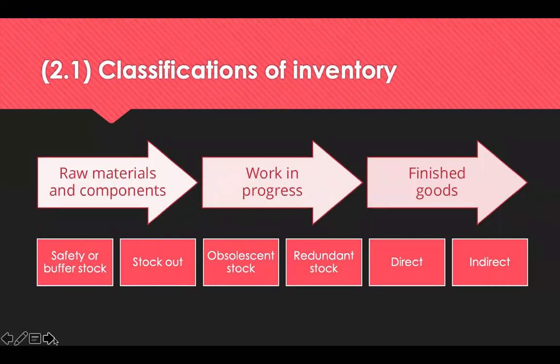A stock out is when you run out of stock. Obsolete stock is often finished goods where demand is irreversible or falling towards zero, like food ingredients which are out of date. Redundant stock is oversupply in its current location — there is potential demand for it, but just not where it currently is, so it can be redirected to other users. Direct supplies are supplies directly incorporated into a finished product, while indirects are not incorporated into a product or sold to a customer; they are required to keep the business functioning, like machine spares, IT equipment, and stationery.